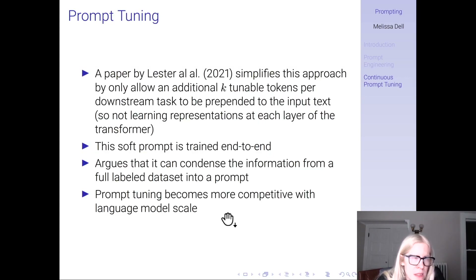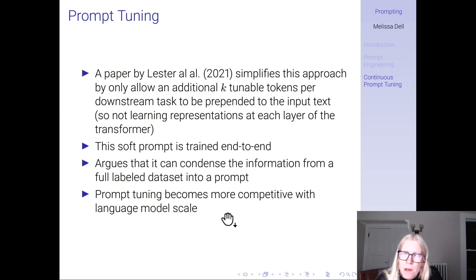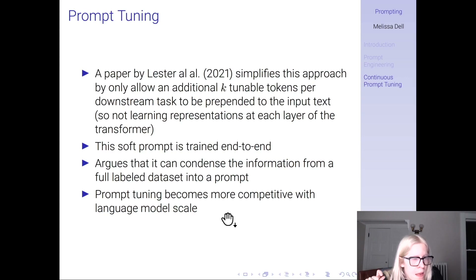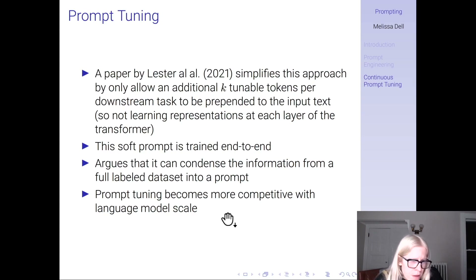There is a paper around the same time that simplifies this by only allowing additional k-tunable tokens per downstream task to be prepended to the input text — so you're just learning a continuous prefix to prepend rather than representations at each layer. These are called soft prompts, trained end-to-end. The paper argues it can condense information from a full labeled dataset into a continuous vector prompt, and shows using ablations on T5 that prompt tuning becomes more competitive as the size of the language model scales.